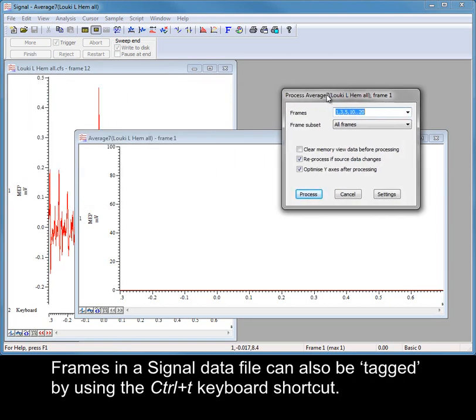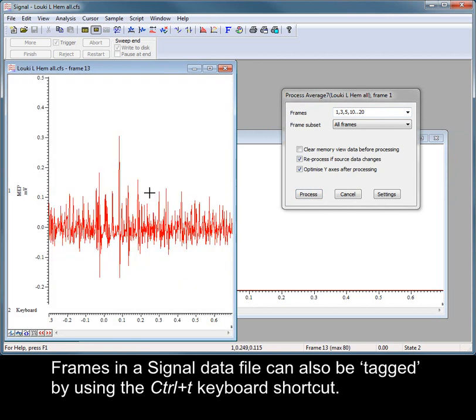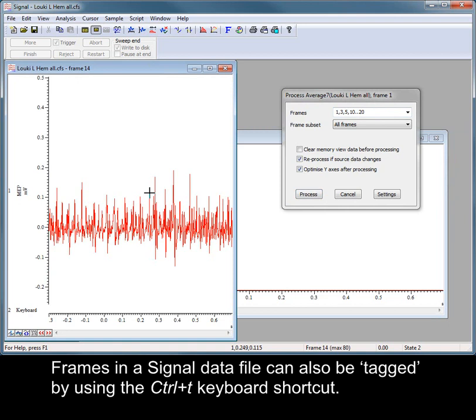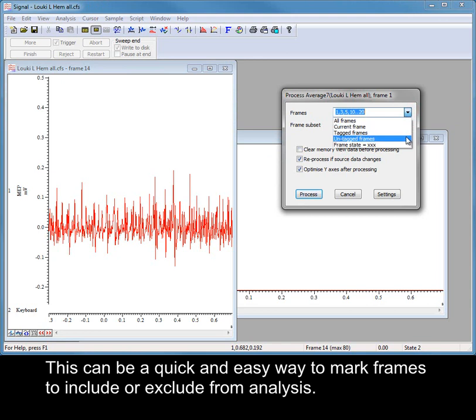Frames in a Signal data file can also be tagged by using the Ctrl-T keyboard shortcut. This can be a quick and easy way to mark frames to include or exclude from analysis.